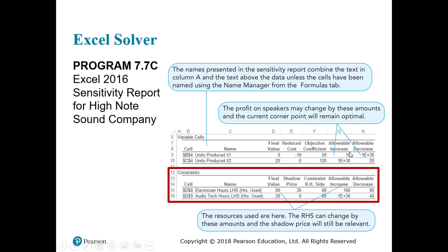Ignore the very large number for the allowable decrease — that just represents infinity. Focus on the sensible number: for x2, the allowable decrease is 20, meaning the profit on x2 (currently 120) can decrease by up to 20, down to 100, and the optimal quantity of 20 units of x2 still holds. If it drops below 100, say to 99 or 98, you need to redo the linear programming. That's the first part of sensitivity analysis: the profit function.